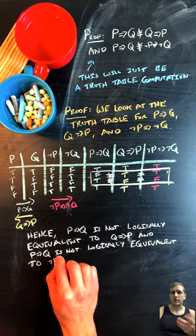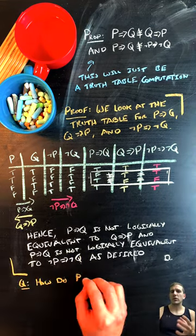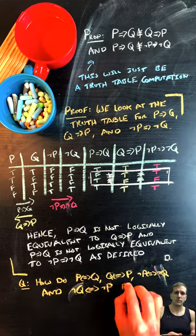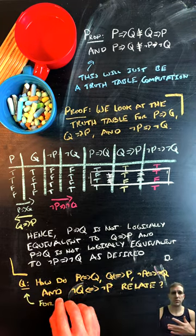If you want more practice with this, you can go ahead and look at the similar statements with the biconditional, so p if and only if q, q if and only if p, and the corresponding inverses of each.